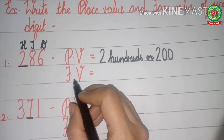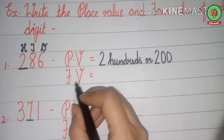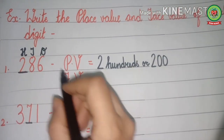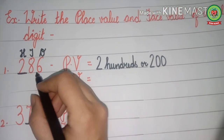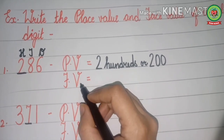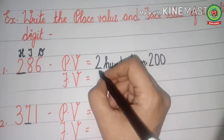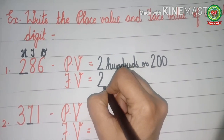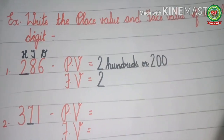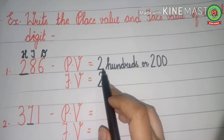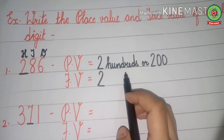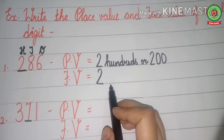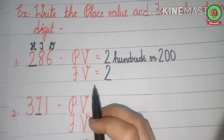Now we will write the face value. FV means face value. The face value of 2 — we just write that number itself — so the face value of 2 is 2. Therefore, the place value of 2 is 200 and the face value of 2 is 2.